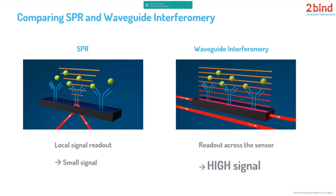The first is the classical SPR — surface plasma resonance — shown on the left side. It uses changes in refractive indexes once an analyte is bound to the immobilized ligand. SPR focuses on specific spots on the sensor chip, so it's a local signal readout, and hence the readout intensity is rather small.